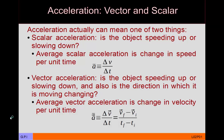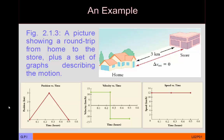To get instantaneous acceleration, you do pretty much the same thing as for instantaneous velocity — you consider these motions over a very, very short time interval. As a conceptual example, let's consider the trip a person might take from home to the store.